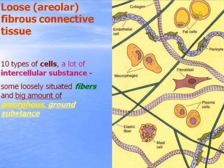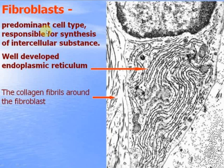Visible cells include fat cells, pericytes, macrophages, fibroblasts, and plasma cells. Fibroblasts are the predominant cell type, responsible for synthesis of intercellular substance — both ground substance and fibers. This cell contains well-developed endoplasmic reticulum, especially rough endoplasmic reticulum, a well-developed Golgi complex, and mitochondria. This electronogram also demonstrates collagen fibrils in longitudinal and transverse section.